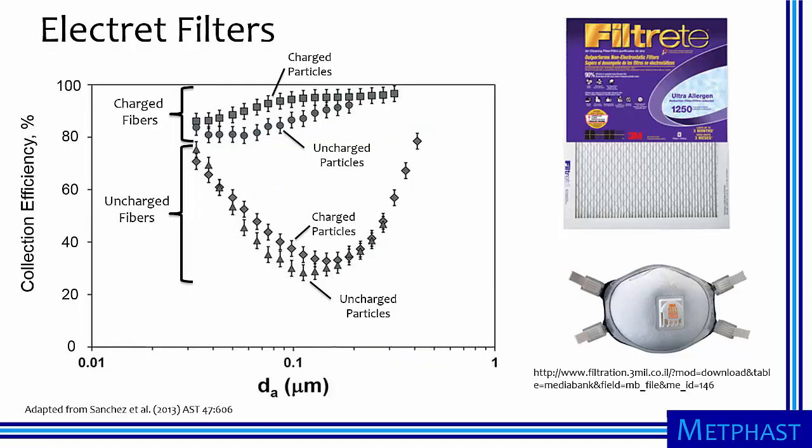Electret filters leverage electrical forces to improve the collection efficiency of filters. In this collection efficiency curve, a filter with uncharged fibers has a collection efficiency curve resembling a poor home furnace filter, regardless of whether the particles are charged or not. If instead the fibers of the filter are charged, then performance is dramatically improved for both charged and uncharged particles. These type of filters are sold commercially under the brand name of Filtrete by 3M and also used in respirators.